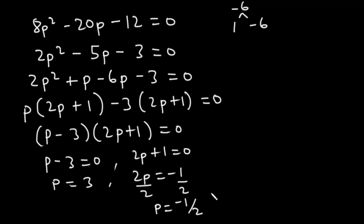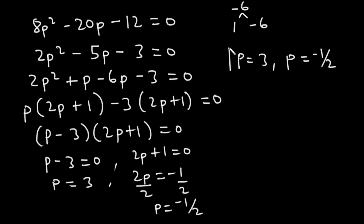We were asked to find the integer value of p. We found p = 3 and p = -1/2. Integers are positive and negative whole numbers including 0. Since p = -1/2 is not a whole number, the integer value of p is 3.